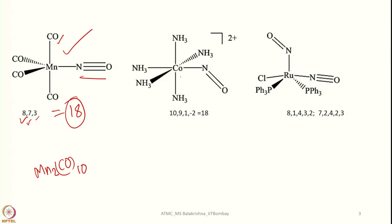Now here we have 10 electrons coming from 5 ammonia molecules by the covalent method, cobalt has 9 electrons, and then the N is bent giving 1 electron, and subtracting 2 charges gives 18 — so it satisfies the 18-electron rule. Now let us look at this molecule: going with the covalent method, 8 electrons are coming from ruthenium, then 1 from chlorine, 2 each from 2 triphenylphosphine ligands, 1 linear NO giving 3 electrons, and 1 bent NO giving 2 electrons — giving a total of 18 electrons. In some cases like this, even if the mode of coordination of NO is not given, after electron counting you should be able to tell that one is linear and one must be bent so that the 18-electron rule is satisfied.